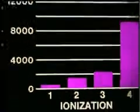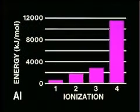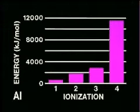Thus, each successive ionization requires more energy. This graph shows the way in which the ionization energies of the aluminum atom increase as successive electrons are removed.